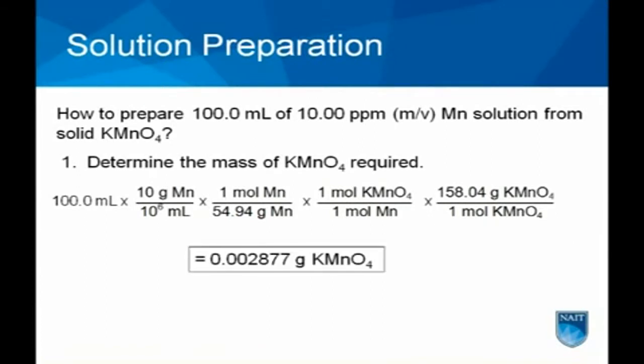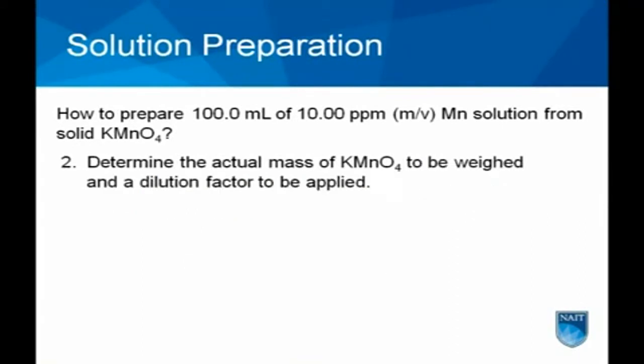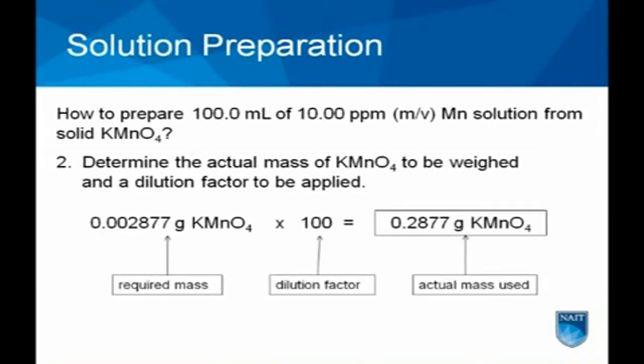A mass of 2.877 milligrams is too small to be weighed accurately on an analytical balance. It is more accurate to weigh a mass greater than 0.2 grams and use a series of volumetric dilutions to transfer small mass. The simplest approach is to weigh out 100 times more sample than required and then dilute the solution by a factor of 100.